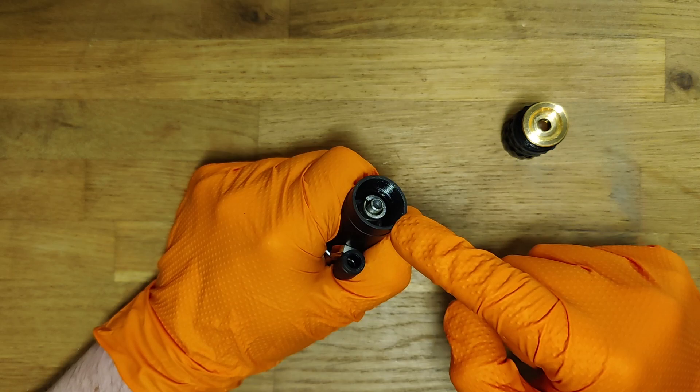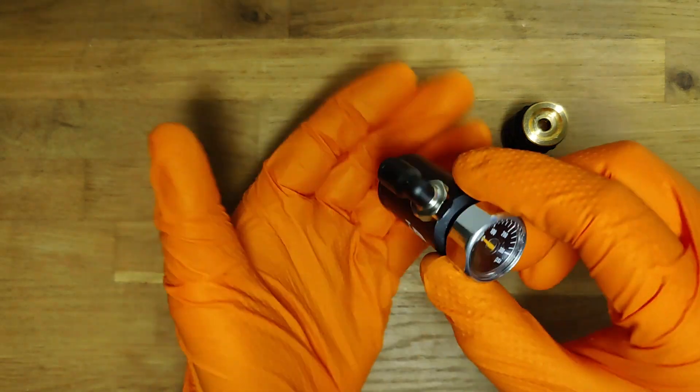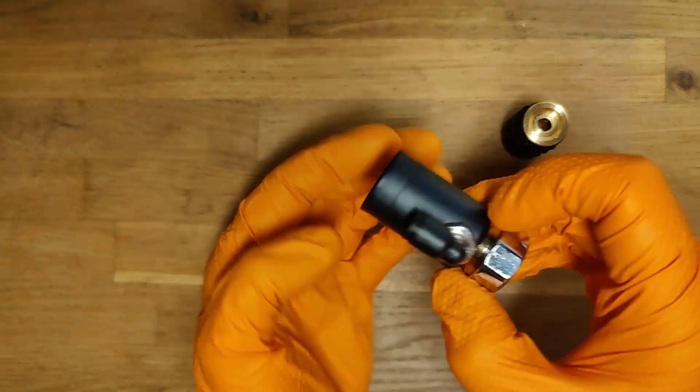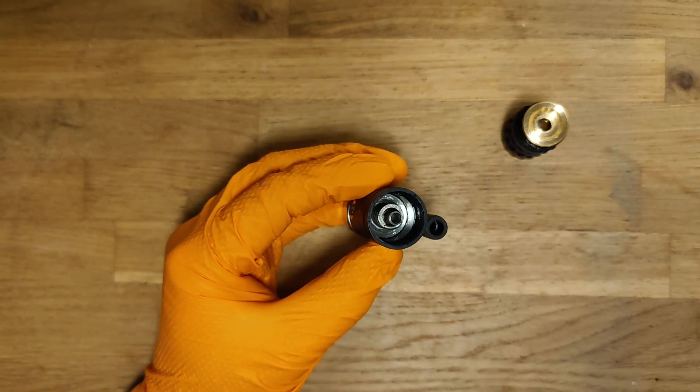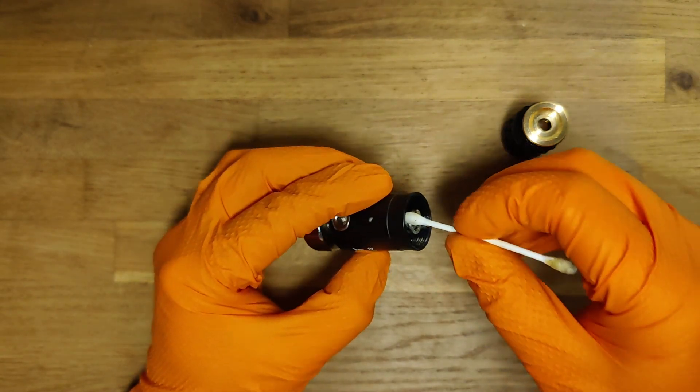The spring is located inside. To take it out, you can try to tap it. If it doesn't come out, you can use a cotton bud and simply take it out.